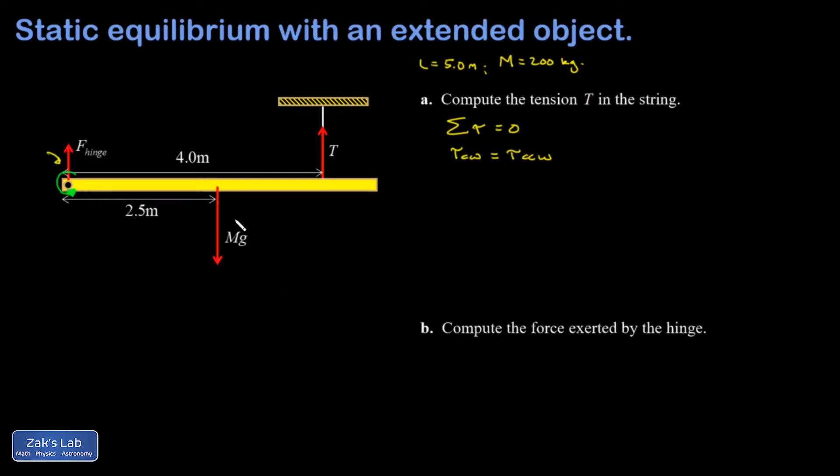So what's going clockwise? Well, mg operates at the center of mass of the rigid body. So I have a total mass of 200 kilograms, multiply by 9.8 meters per second squared, and I get 1,960 newtons for the force of gravity.